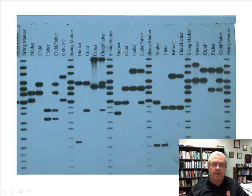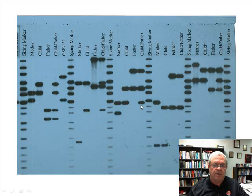What about alleged father number three? We have mother, child, alleged father. Could this guy be the real father? Sure he could, because here's the child's lane — this band matches the one on the mother's lane, and this band matches the one on the father's lane. Now, is he definitely the real father based on these few lines? No, there'd have to be a whole bunch of other gels, statistics, and all that kind of stuff. But this guy's at least on the hot seat.